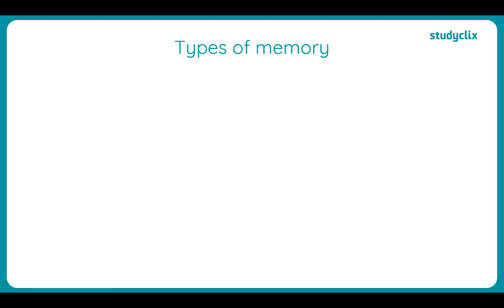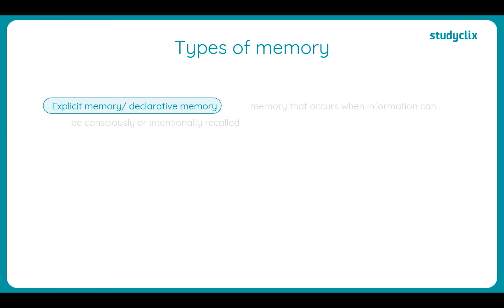To start our recap on the different types of memory, we have explicit memories, which are also known as declarative memories. For the purpose of this video I'm going to refer to them as explicit memories so we don't get confused. This refers to memories that occur when information can be consciously or intentionally recalled. There are two different types.